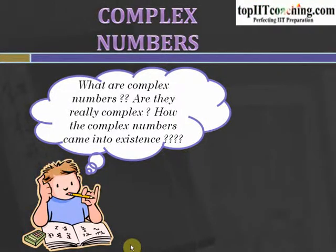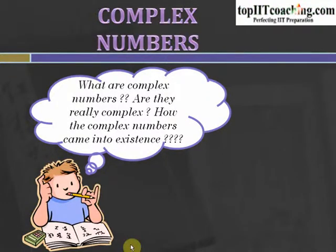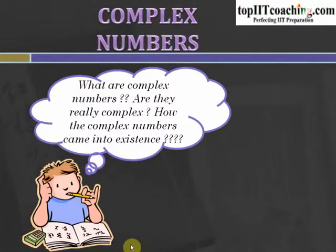Complex numbers — this is altogether a very new concept. Earlier we have seen what are natural numbers, whole numbers, integers, rational numbers, irrational numbers, and even real numbers. But now what sort of numbers are complex numbers? Are they really very complex to study? How did complex numbers come into existence? These are some of the questions that must be coming to your mind right now, but don't worry — in this lecture we are going to find an answer to all these questions.